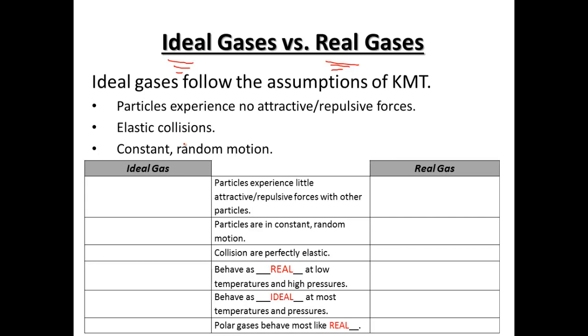Ideal versus real gases. Particles experience little attractive or repulsive forces with one another. So this would be an idea for an ideal gas. Particles are in constant random motion. This fits the ideal gas and real gases. Both of them are in constant random motion. Collisions are perfectly elastic. That's in the ideal gas world.